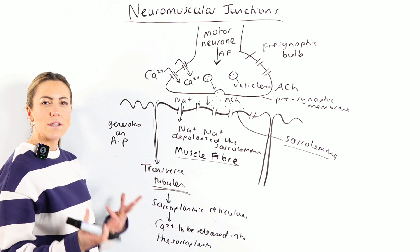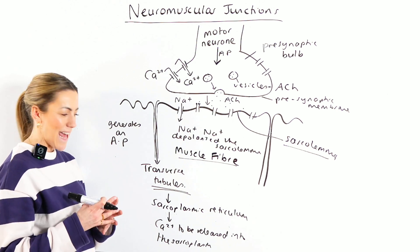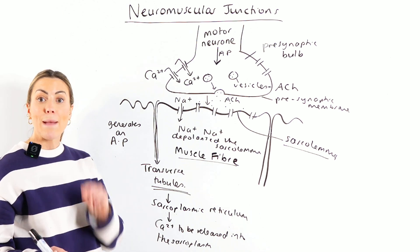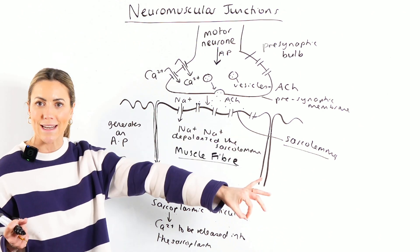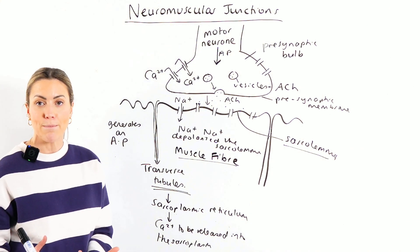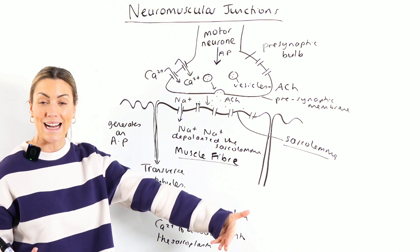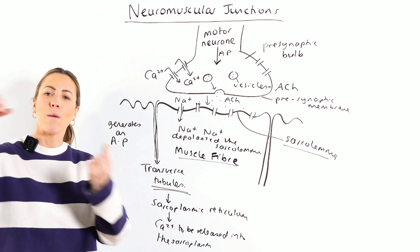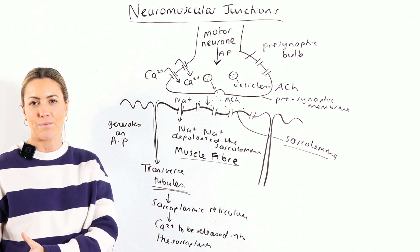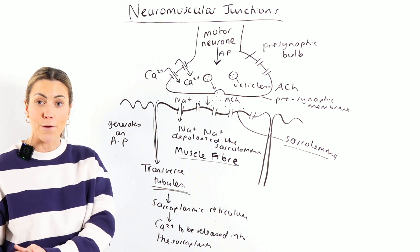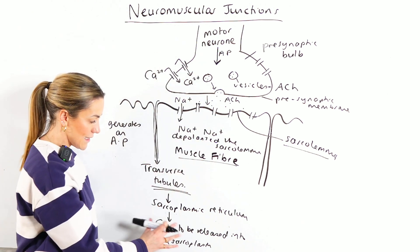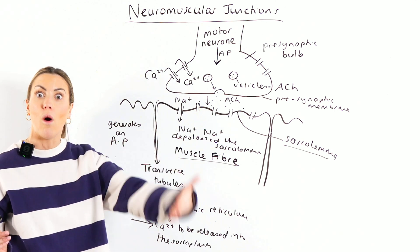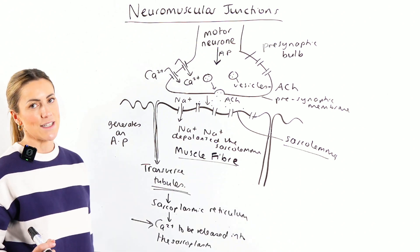The sarcoplasm surrounds the myofibrils. The calcium ions released from the sarcoplasmic reticulum move into the sarcoplasm, where they bind to troponin. This causes troponin to change shape, which moves the tropomyosin aside and exposes the binding sites on the actin for the myosin heads — leading to the formation of an actin-myosin crossbridge. This links into sliding filament theory: those calcium ions are what move the tropomyosin aside to expose the binding sites.